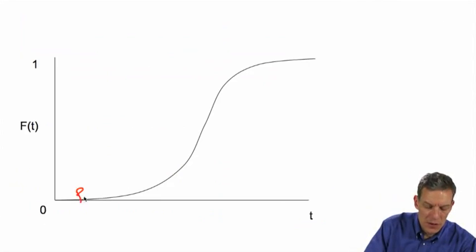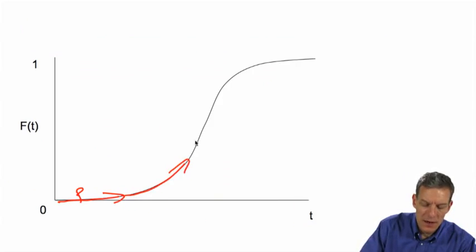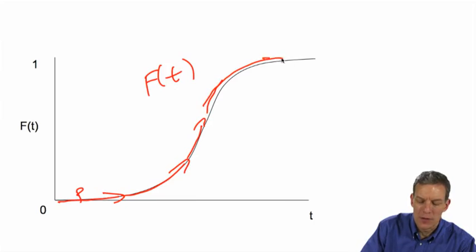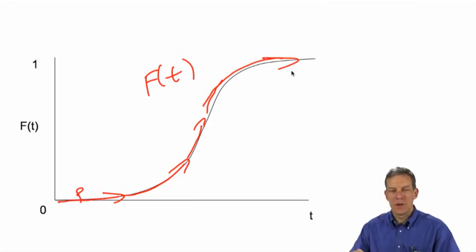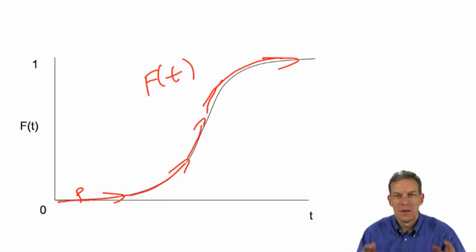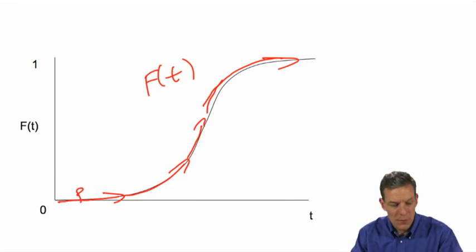If p is bigger than q, we get initially the slope is p. Then it starts accelerating. And eventually when f(t) gets very large, it's going to have to slow down because now there's just not many adopters left. And then things slow down and we eventually get an asymptote towards one. So that's the Bass model. Very compact, simple, easy model.